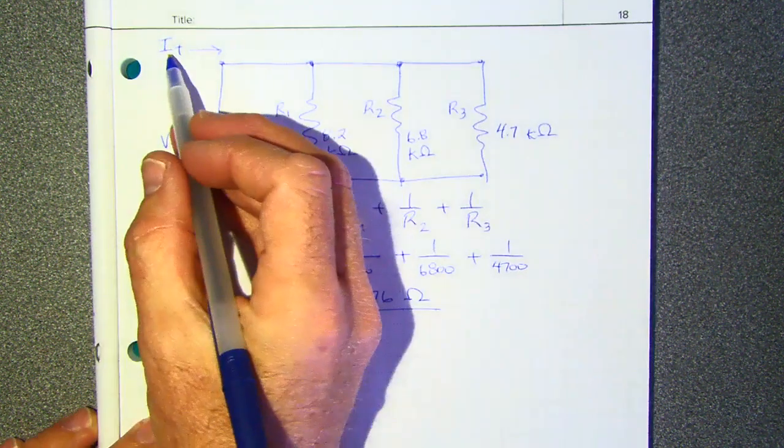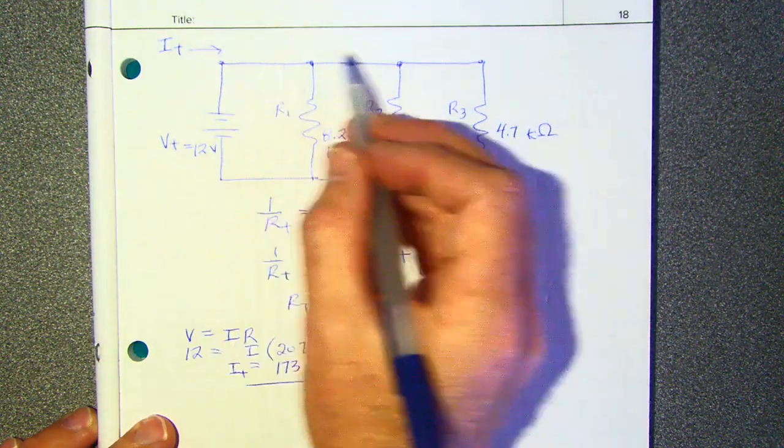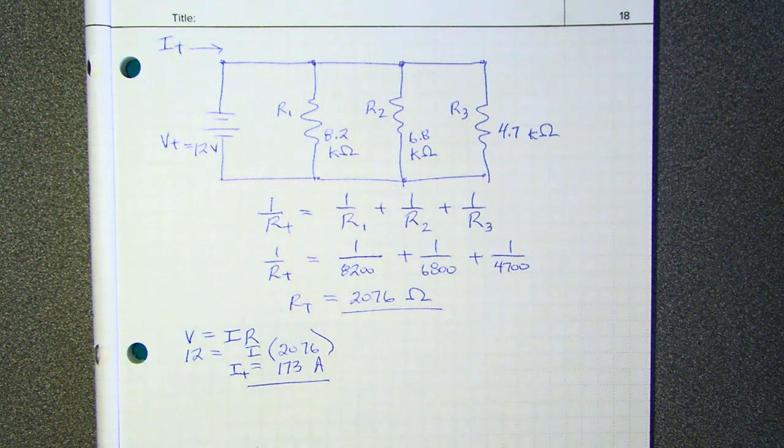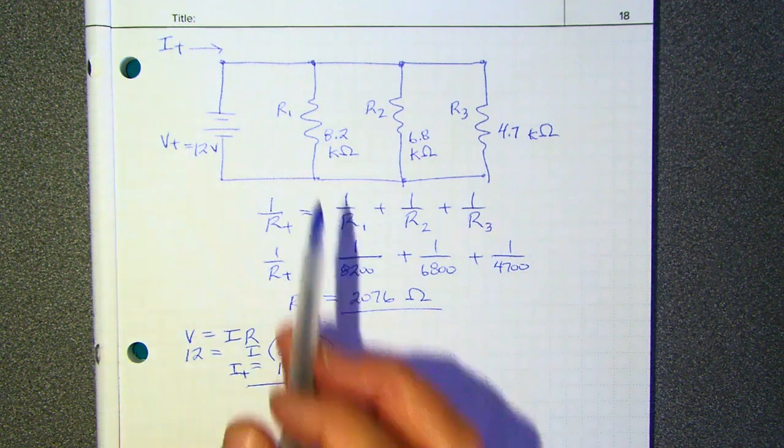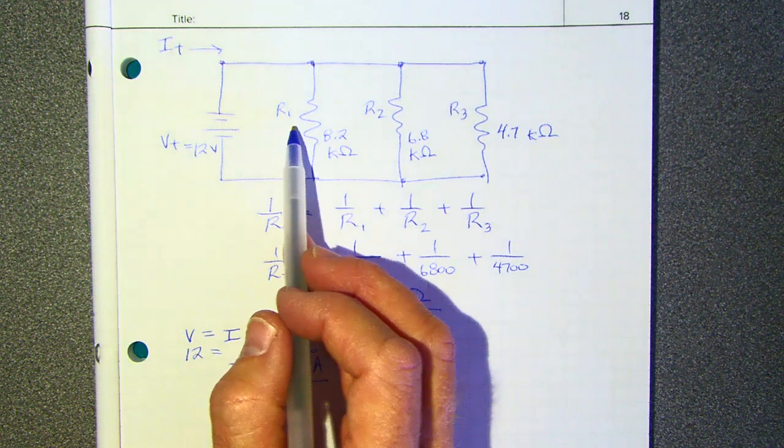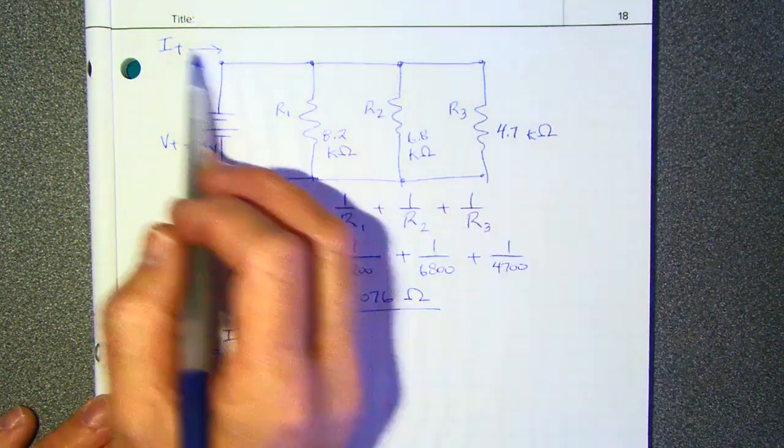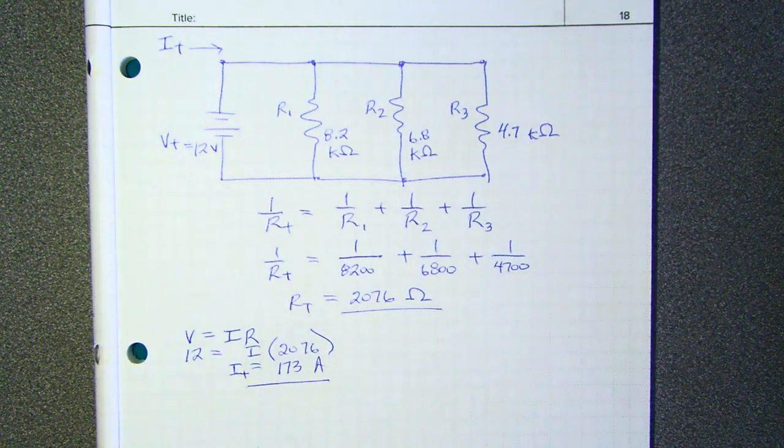So this current is going to be different in each of the three resistors. I don't know what it's going to be, but it's going to be different. However, I also know that the current in the three resistors will add up to the total current. So that's nice. I don't know if that's quite going to get me where I need to go.